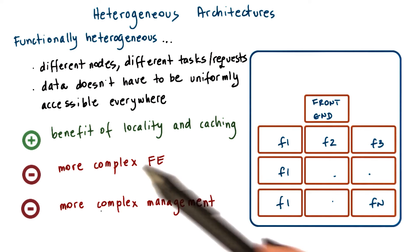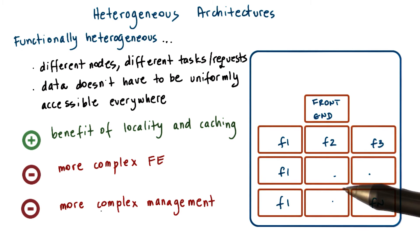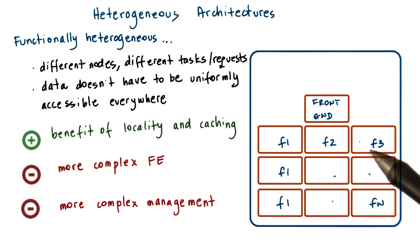Second, the overall management of these systems becomes more complex. When nodes fail or when request rates increase and we need to add more machines, it is important to know what kinds of machines to add, how to configure those machines, and what types of requests or tasks those machines should be designated for.